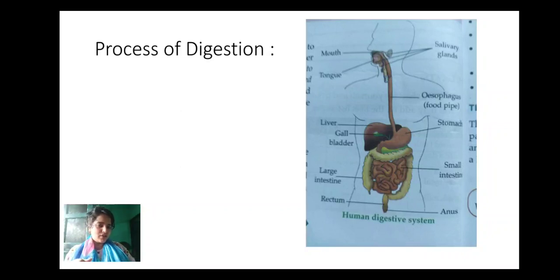So what happens in small intestine? That the digested food particles, nutrients, are absorbed by blood vessels and it gives to all the different body parts, the nutrients to all the different body parts.